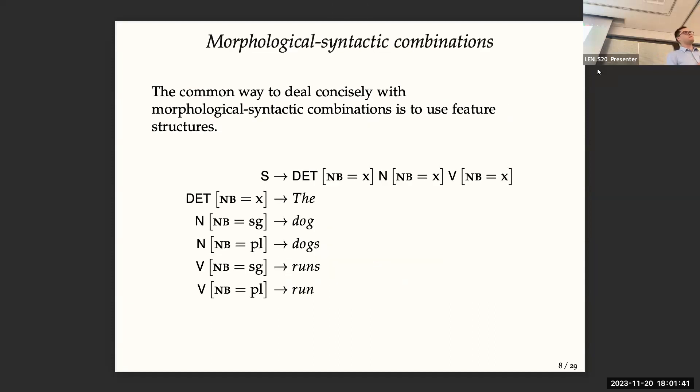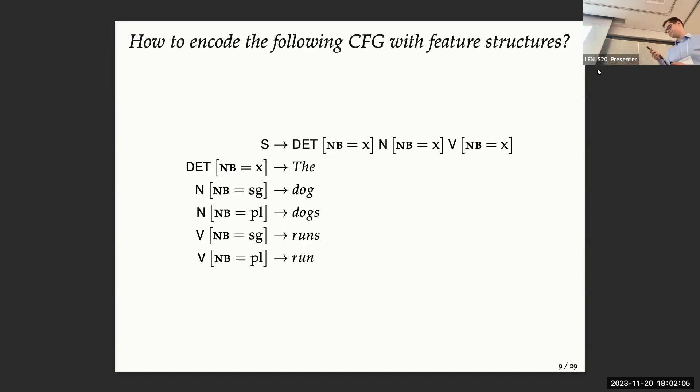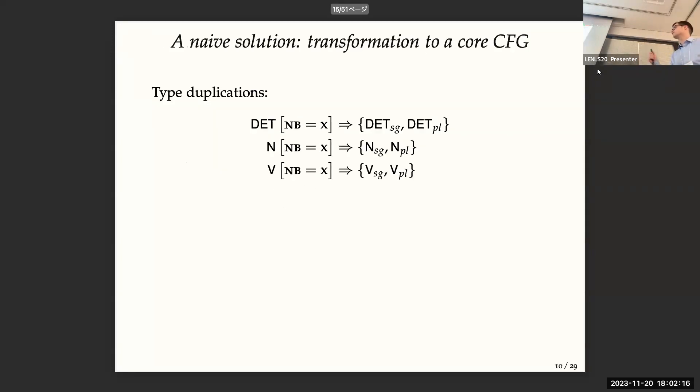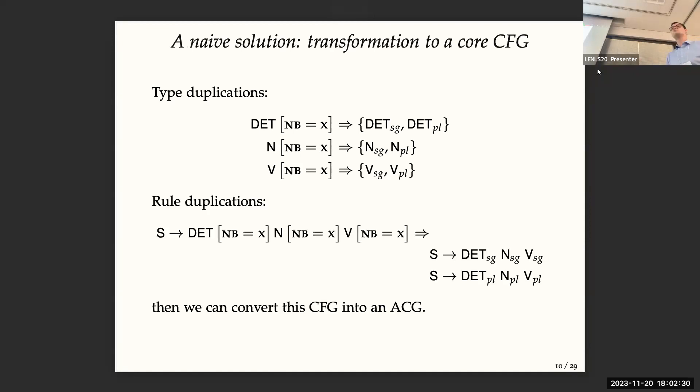But we have a problem in ACG and in CG in general. The common way to deal concisely with morphosyntactic combinations are to use feature structures. However, we have only atomic types. For example, how can we encode this CG with feature structure? Well, there is a naive way to do it, which is to duplicate types. So if we have a determiner which depends on the number, we generate DET SG and DET PL, et cetera. And we have also to duplicate the rules.